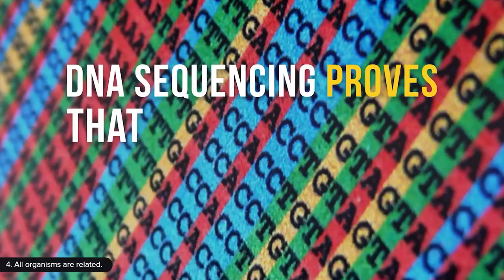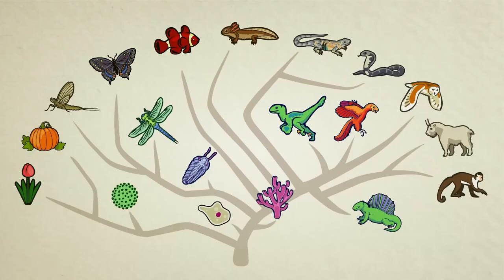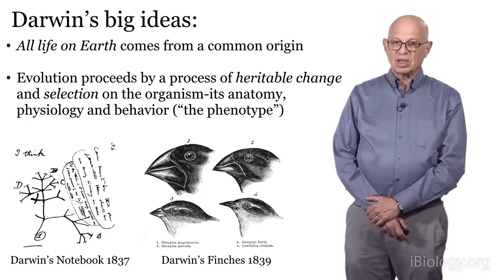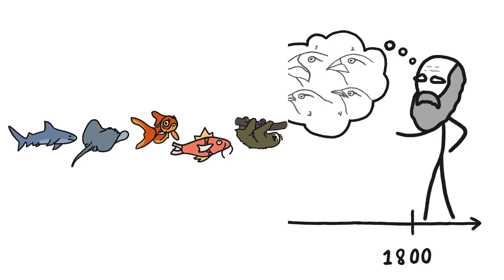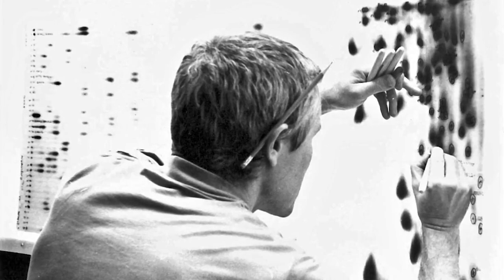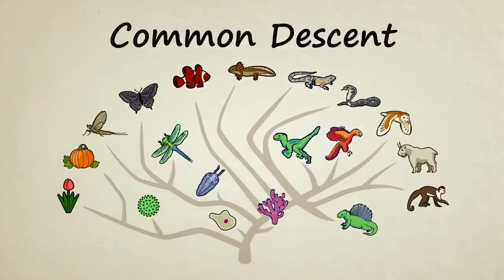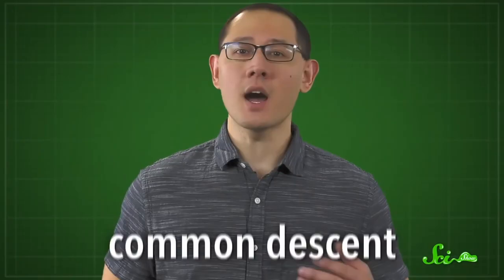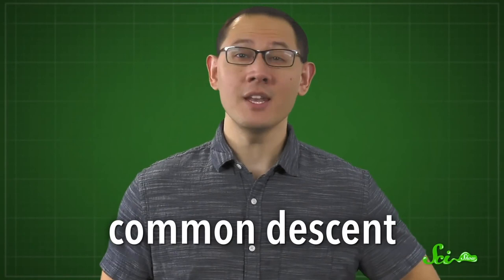All living things are related to one another. All life on earth comes from a common origin. All known life is related and descended from a common ancestral state. They descended from a common ancestor — all life, as we know it, is descended from a common ancestor.